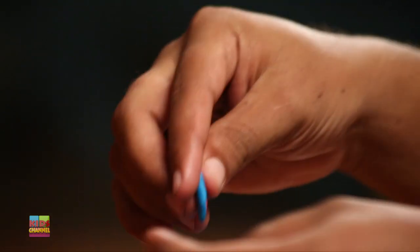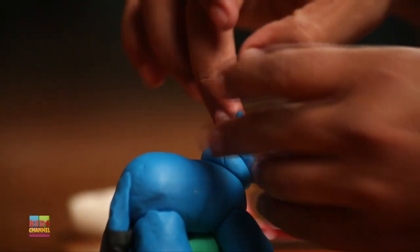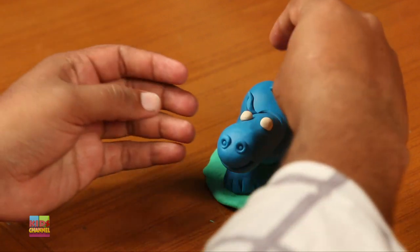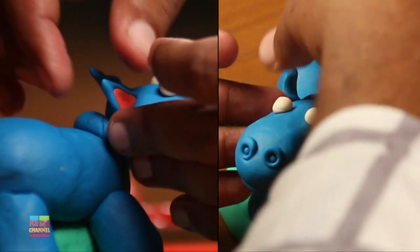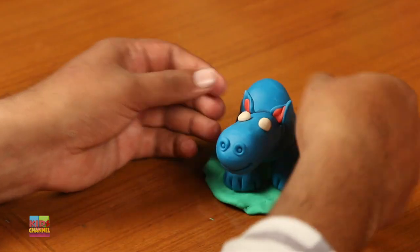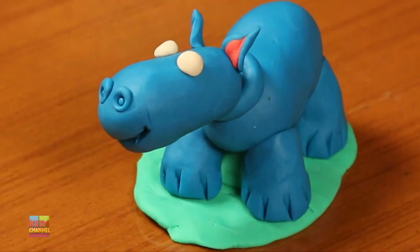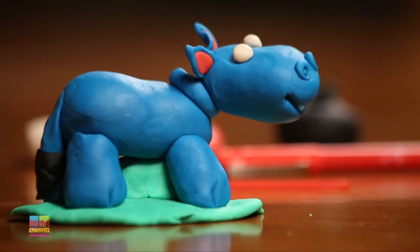And you remember those two pieces where we had the orange pressed against the blue? Now it's time to use those. Attach those to the very back of the head. These are going to be the ears of the rhinoceros. What a huge head. See the ears, the nostrils, the eyes? But we're missing something.